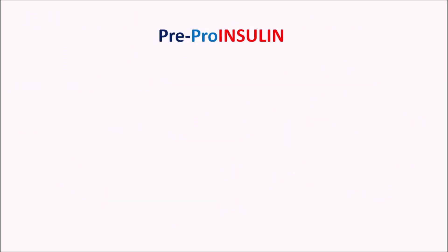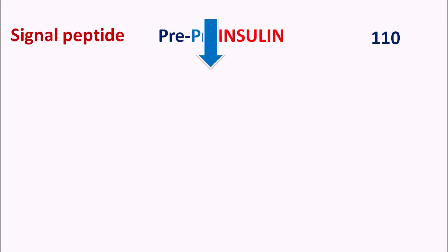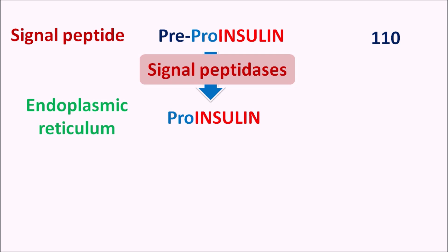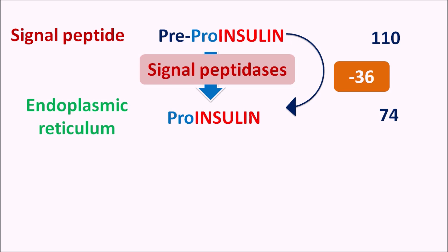Pre-pro-insulin is the signal peptide responsible for the release of insulin based on blood glucose levels. It has 110 amino acids. This signal peptide is converted into pro-insulin within the endoplasmic reticulum, and this cleavage is mediated by signal peptidases. Pro-insulin has 74 amino acids — a chain of 36 amino acids is deleted in this conversion. A helpful memory aid: 7 plus 4 equals 11, linking 110 (pre-pro-insulin) to 74 (pro-insulin).